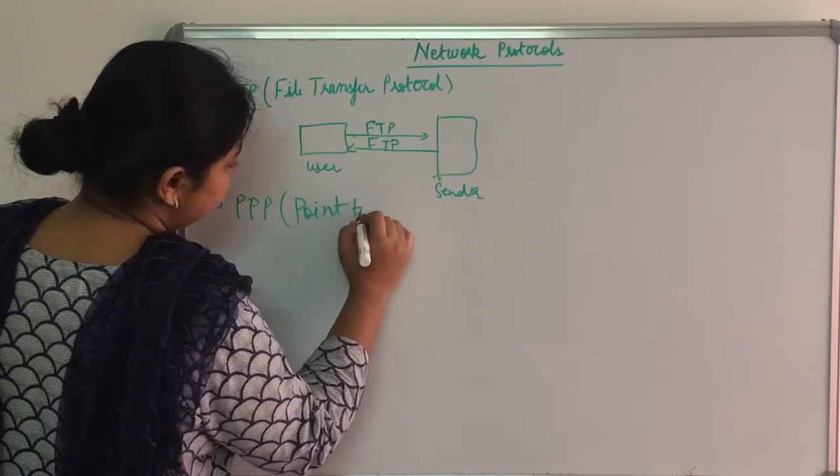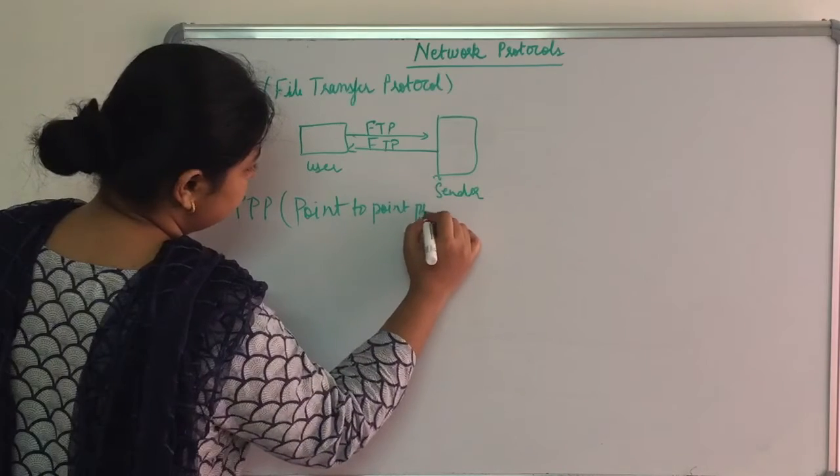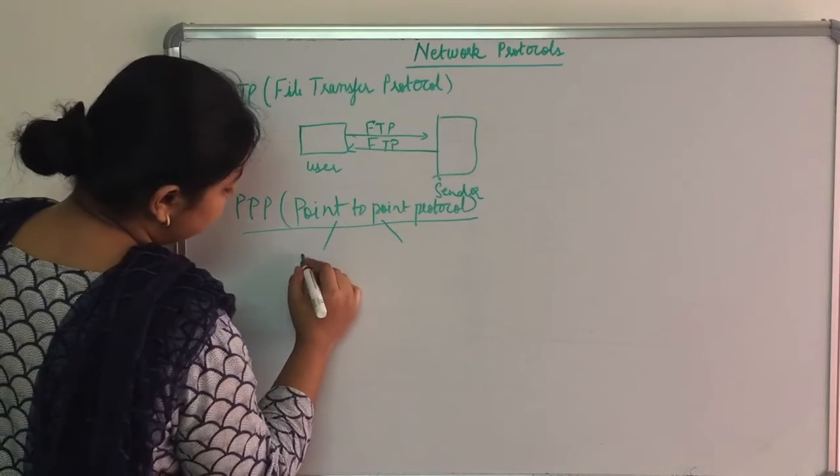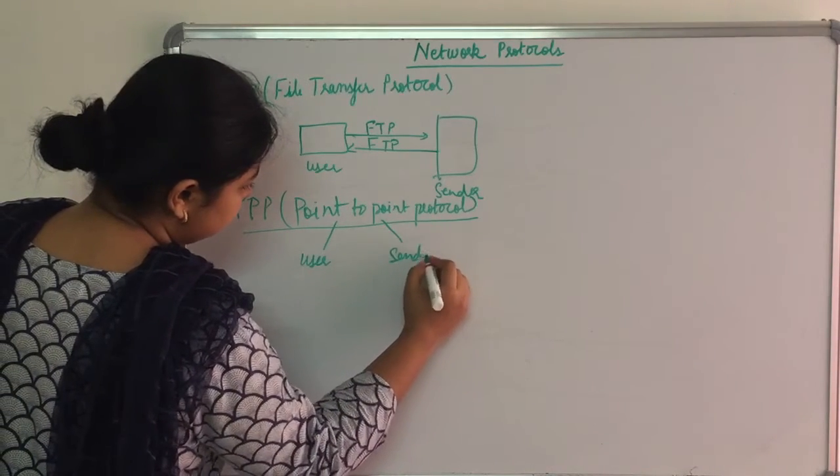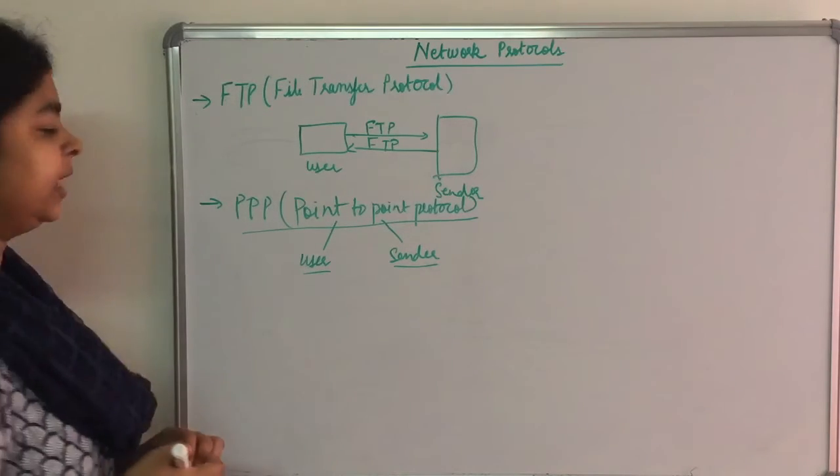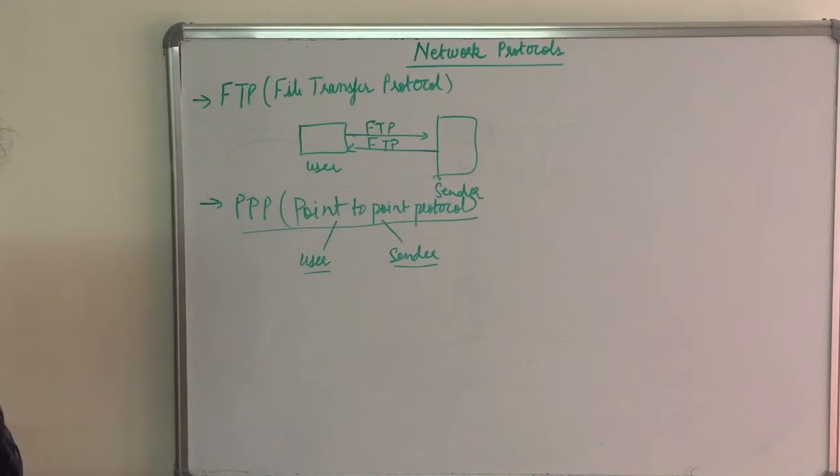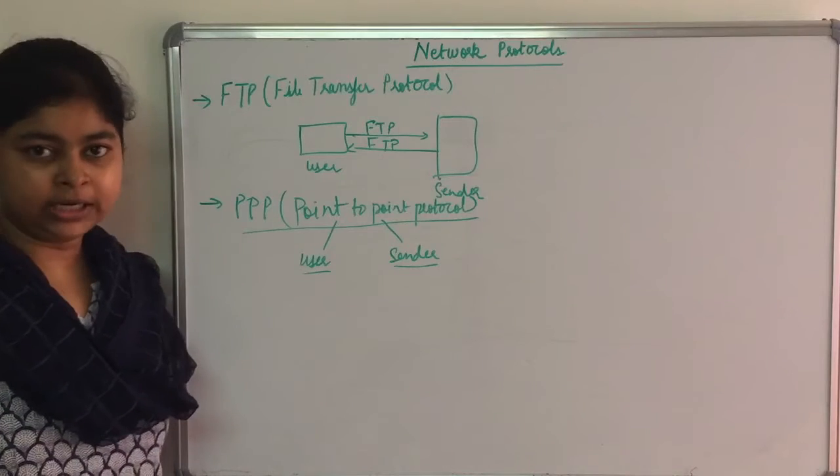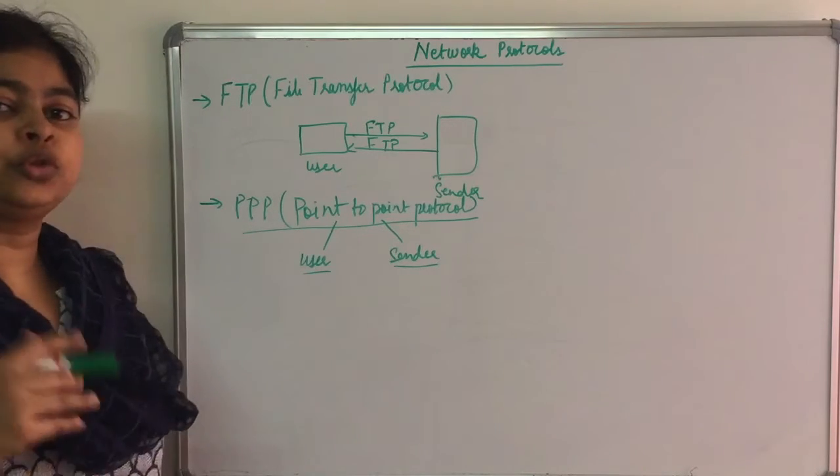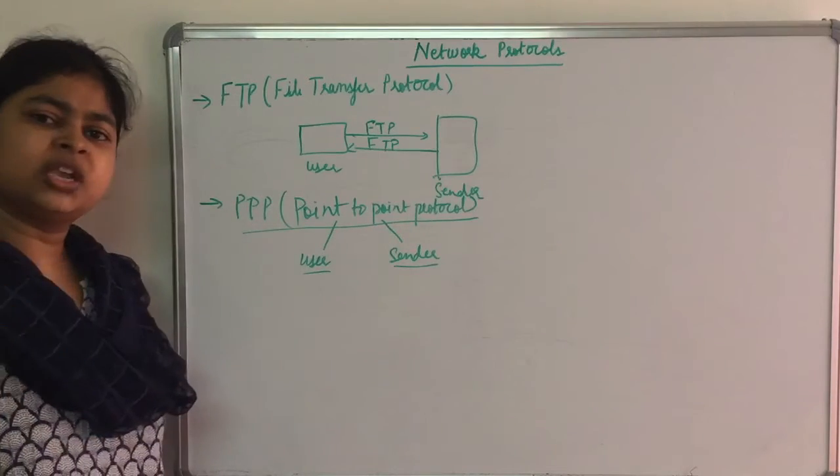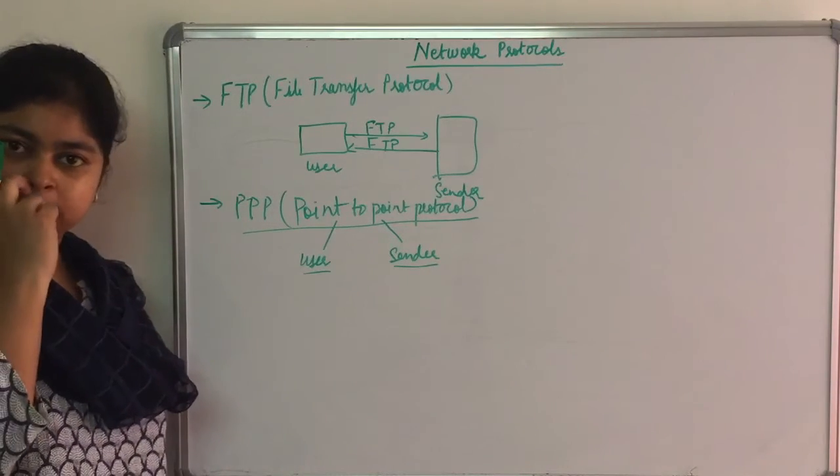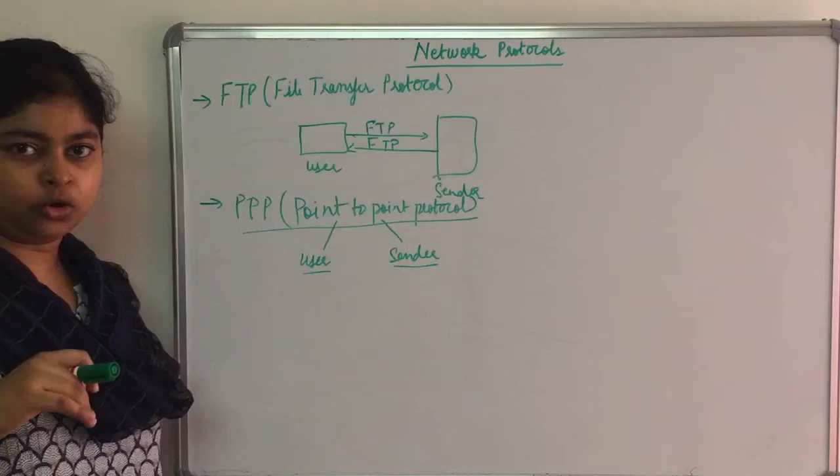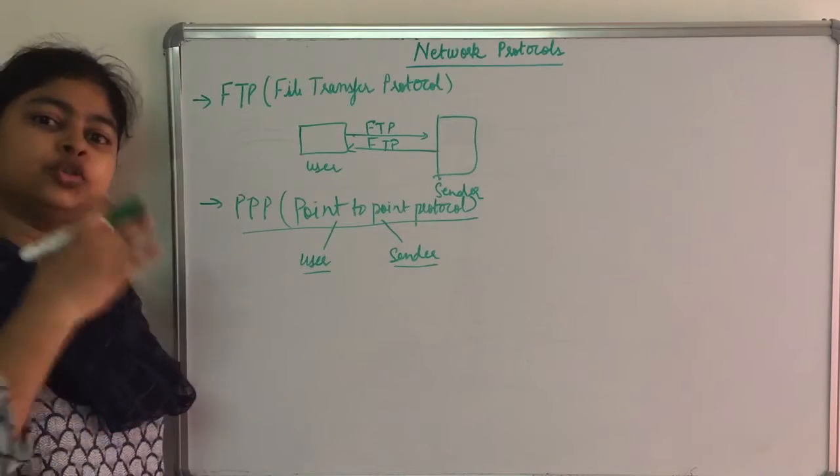Next we will talk about PPP. This is Point to Point Protocol. Point means one of your user, one of your sender. So what is its work? Transmission of IT packets over serial line. Serial line means telephonic line internet which is telephonic line through connected. Now you will think why telephonic line directly internet, why don't we use dial-up?